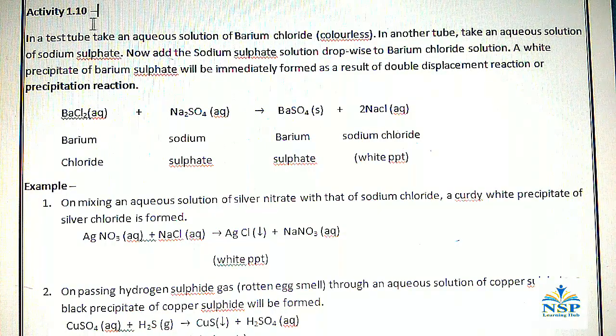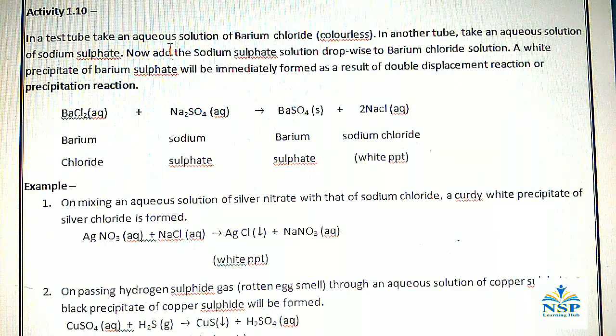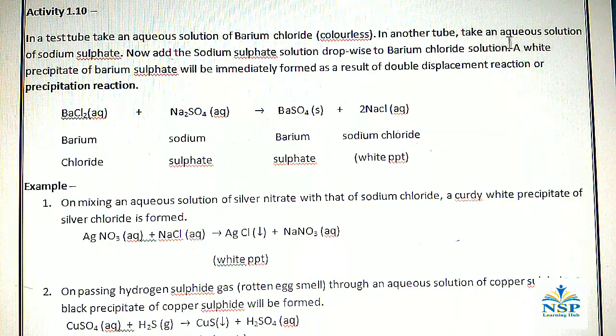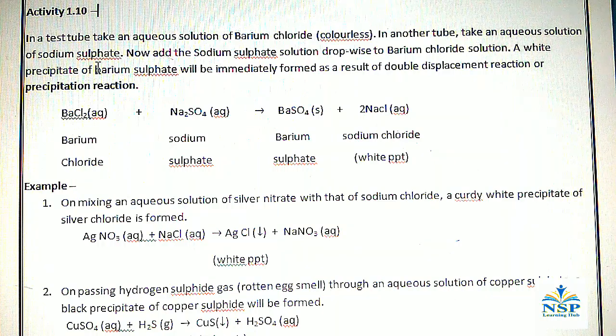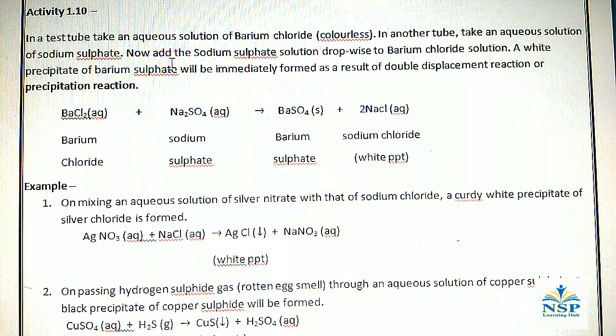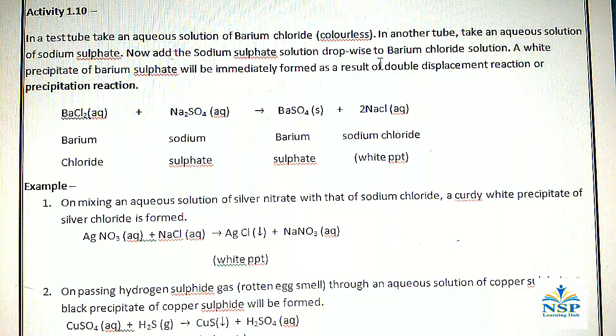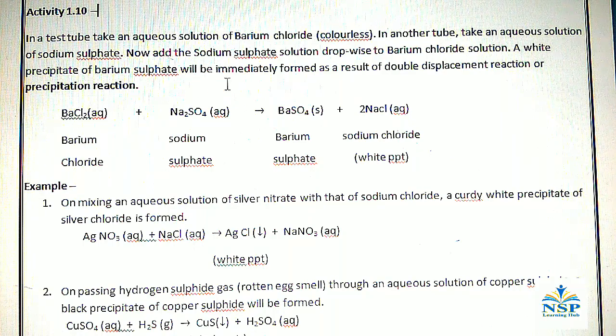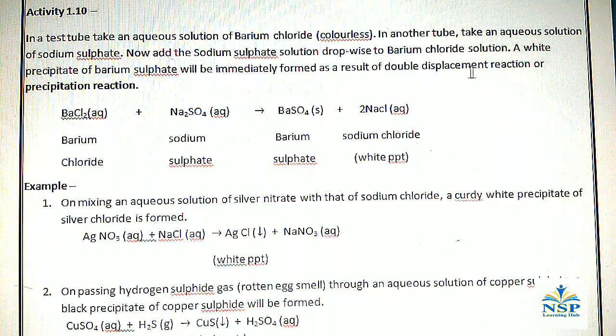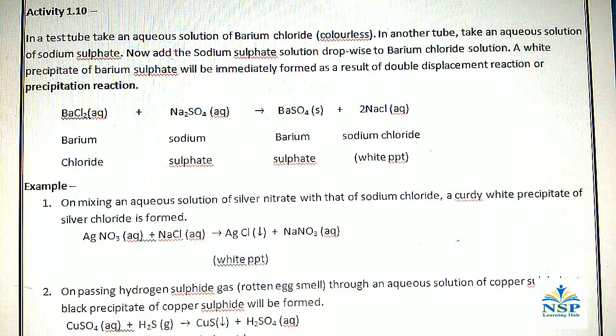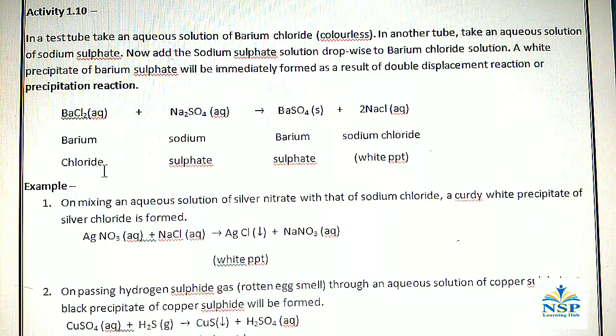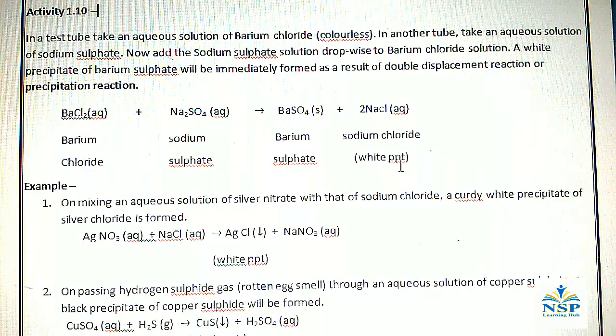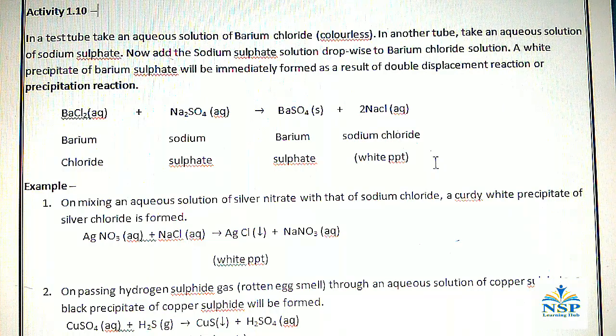Activity 1.10. In a test tube, take an aqueous solution of barium chloride which is colorless. In another test tube, take the aqueous solution of sodium sulfate. Now, add the sodium sulfate solution dropwise to barium chloride solution. A white precipitate of barium sulfate will be immediately formed as a result of double displacement reaction or precipitation reaction. BaCl2 plus Na2SO4 gives BaSO4 plus 2NaCl. White precipitate of barium sulfate.